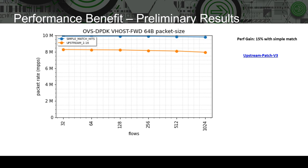Here we have a simple graph that shows performance gain with simple match flows. The configuration is what we have seen in earlier slides. Before this optimization, the PPS rate of flows for 64-byte size packets and for various number of flows ranging from 32 to 1K flows is approximately 8 to 8.5 million packets per second. After building OVS with the simple match feature, the number is consistently close to about 10 million packets per second — that's about an improvement of 15%.